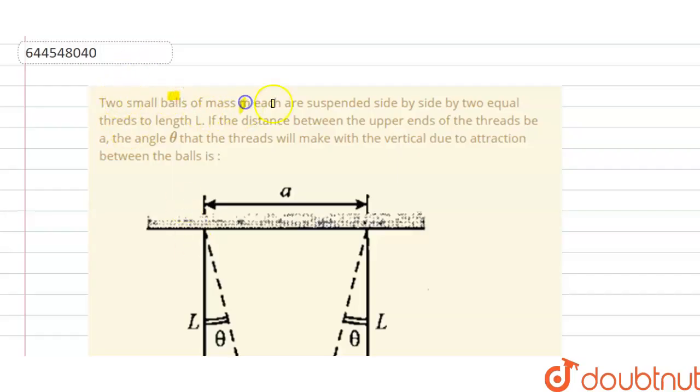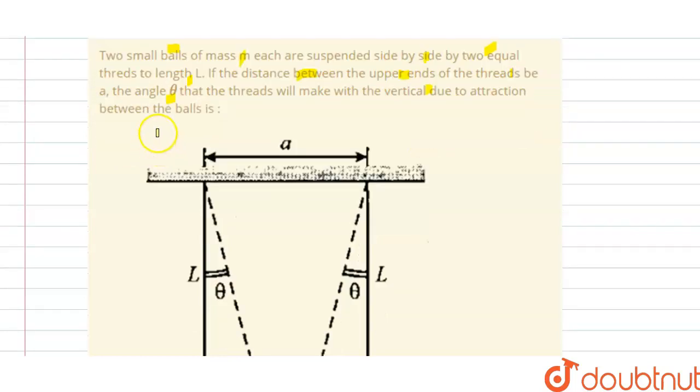Two small balls of mass m each are suspended side by side by two equal threads of length l. If the distance between the upper ends of the threads be a, and the angle theta that the threads will make with the vertical due to the attraction between the balls is: